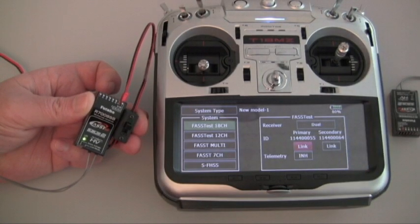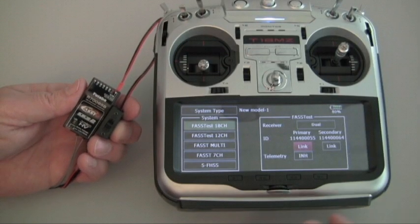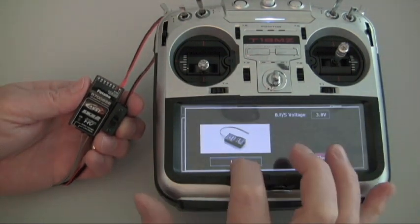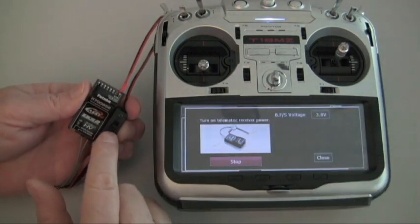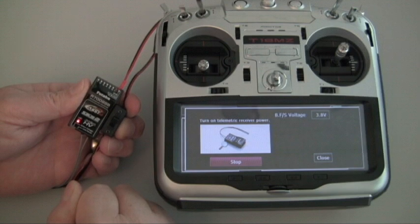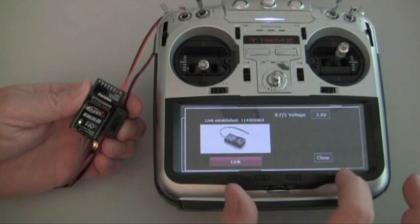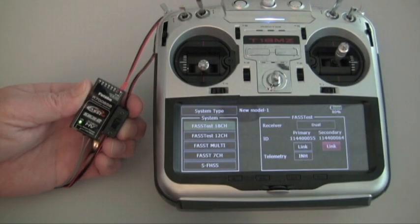Next we're going to move over to the second receiver and do the same thing. We've got our second receiver up here now. I'm going to hit link on secondary receiver. Start the linking process. Turn on the receiver. Established a link so it's all set now as well. So now we have both of them linked.